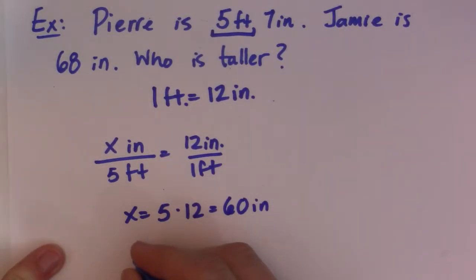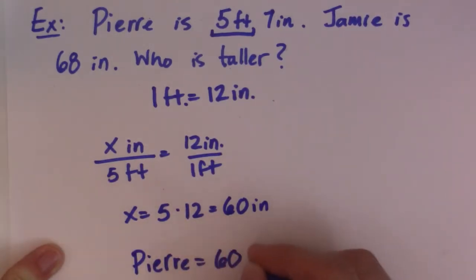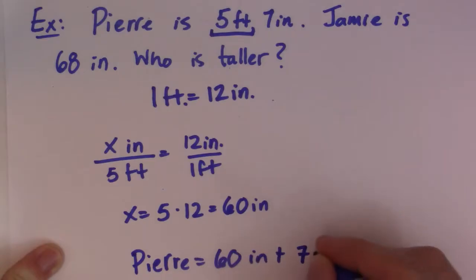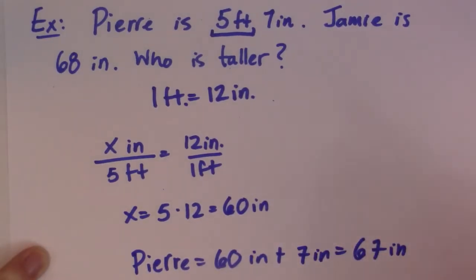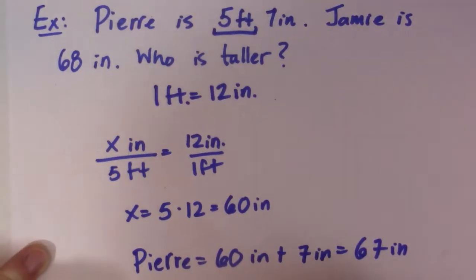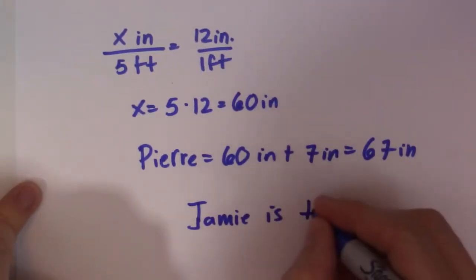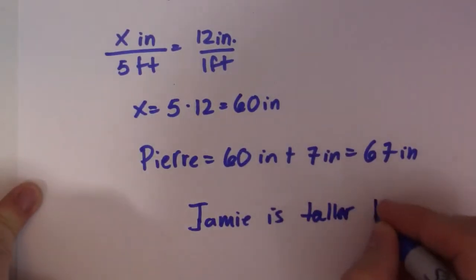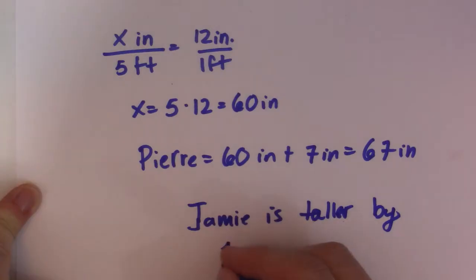So now I have Pierre is going to be 60 inches plus the 7 inches that he already has. So he's 67 inches. And Jamie is 68. So Jamie is taller by 1 inch.